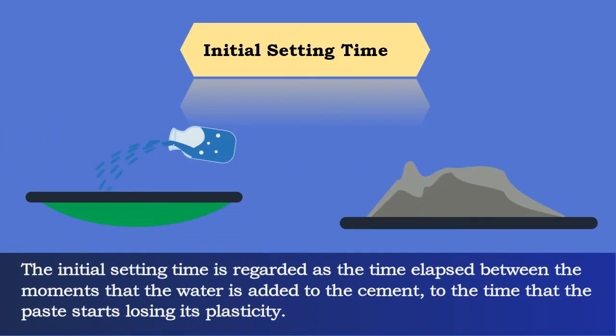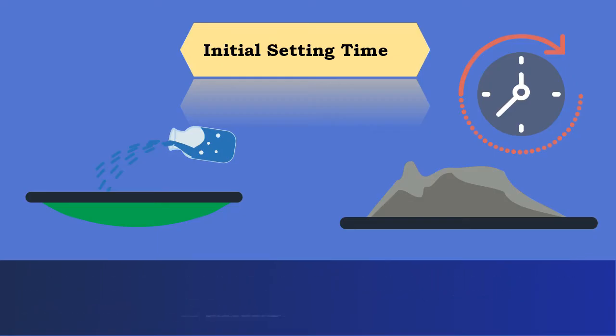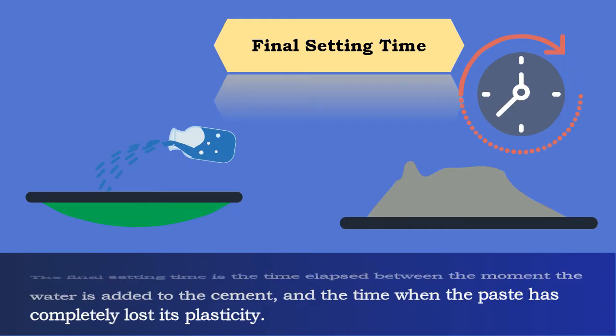The initial setting time is regarded as the time elapsed between the moment that the water is added to the cement, to the time that the paste starts losing its plasticity. The final setting time is the time elapsed between the moment the water is added to the cement, and the time when the paste has completely lost its plasticity.